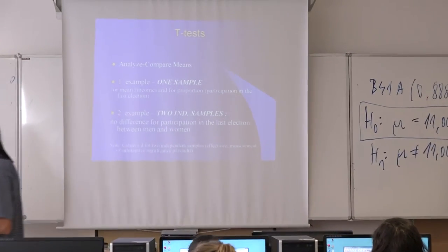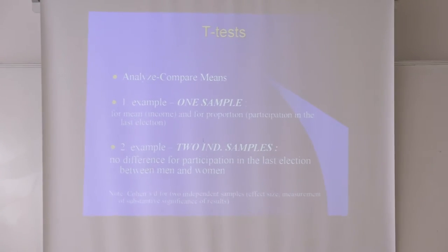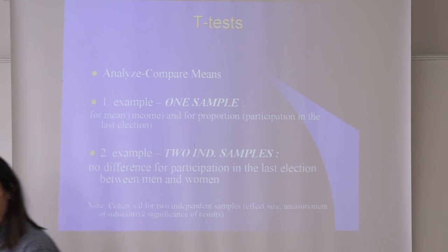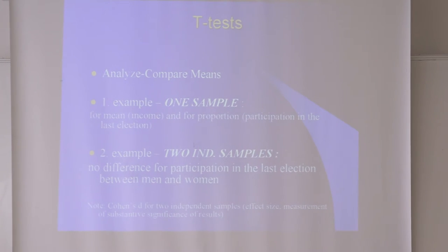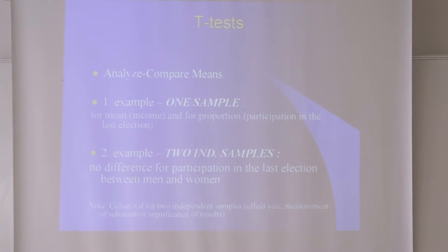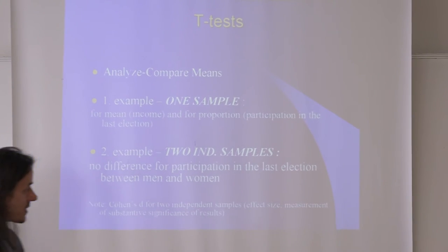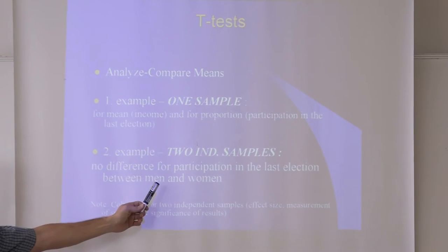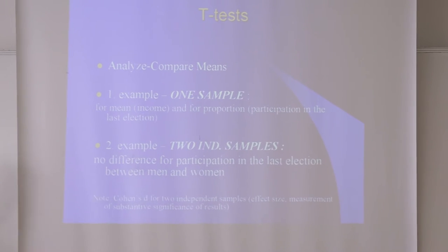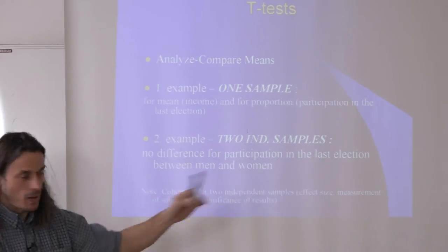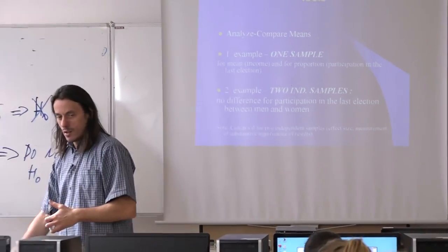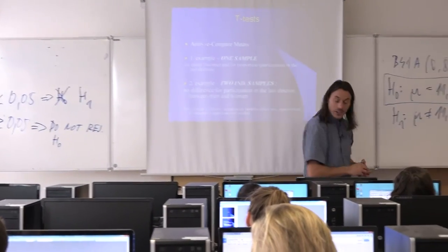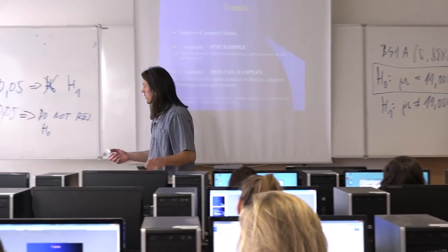As discussed previously, T-tests can be used not only for cardinal variables — averages — but also for proportions of binary variables. We will use the two independent samples test for proportions. Our null hypothesis will say there is no difference in participation in the last election between men and women — though the two groups could also be people from different regions or any other criterion for differentiation.